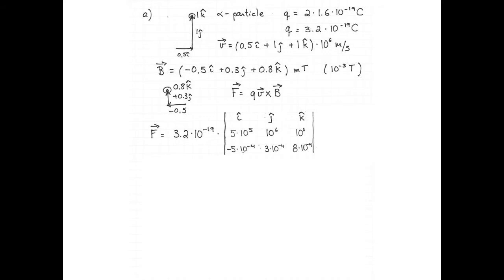To calculate the force using Q times v cross B, I like to calculate the determinant of the following matrix. On the first row are the unit vectors i-hat, j-hat, k-hat. On the second row are the components of the velocity vector: 5 times 10 to the 5 in the i-hat direction, 10 to the 6 in the j-hat direction, and 10 to the 6 meters per second in the k-hat direction. On the last row is the magnetic field: negative 5 times 10 to the negative 4, 3 times 10 to the negative 4, and 8 times 10 to the negative 4 Tesla. To make calculations easy, I copy the first two columns of the matrix again.